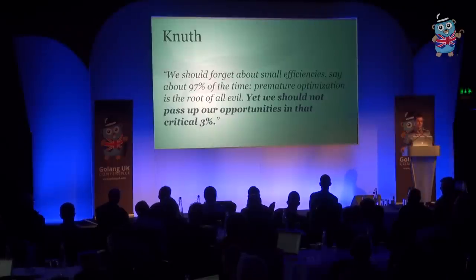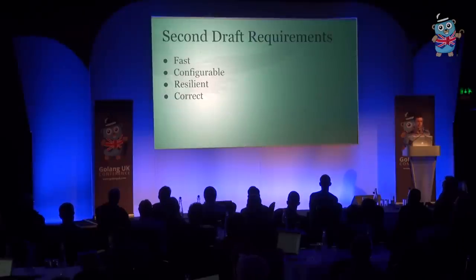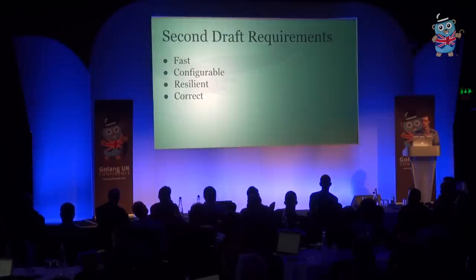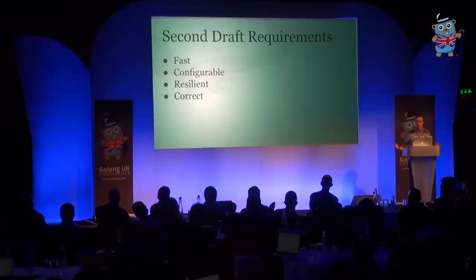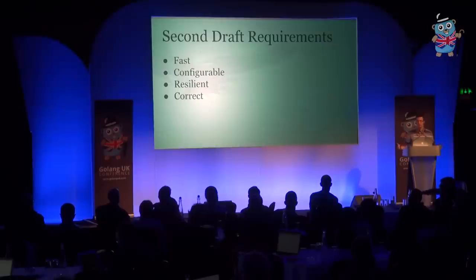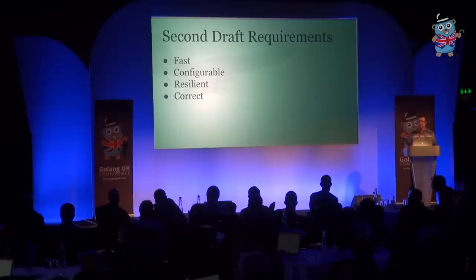So we salvaged what we could and rewrote it. The second draft of Sarama that eventually became our 1.0 had a couple of requirements. It had to be fast — in terms of Kafka, that means batching messages together, trading off some latency in return for throughput. It had to be configurable, because that trade-off has to be configured depending on the needs of your application. It has to be resilient — Kafka is a distributed system, distributed systems often fail in pieces, and if one node fails, that failure should not affect the rest of the system. And it had to be correct, which given the other requirements is not as simple as it sounds.